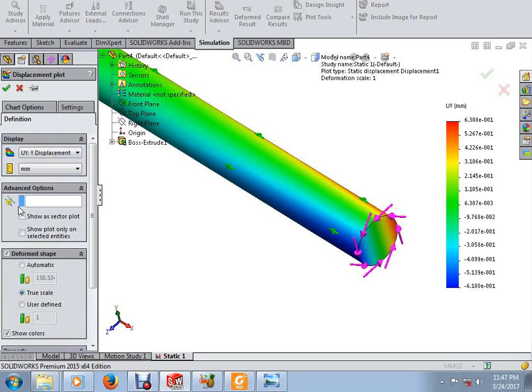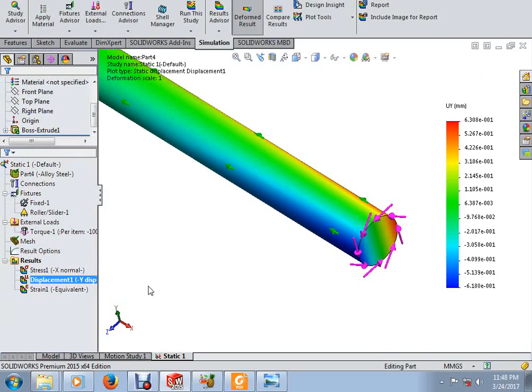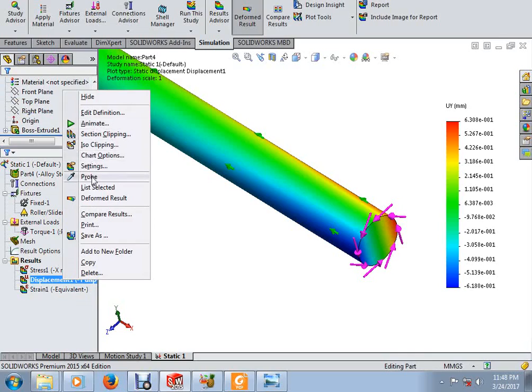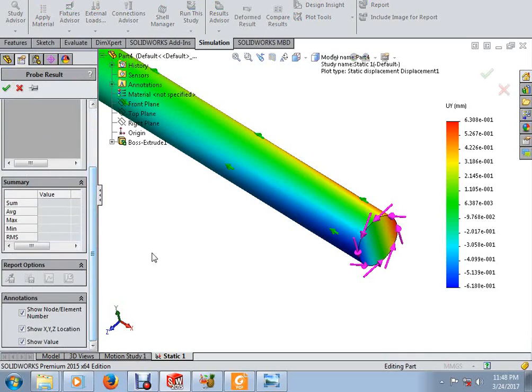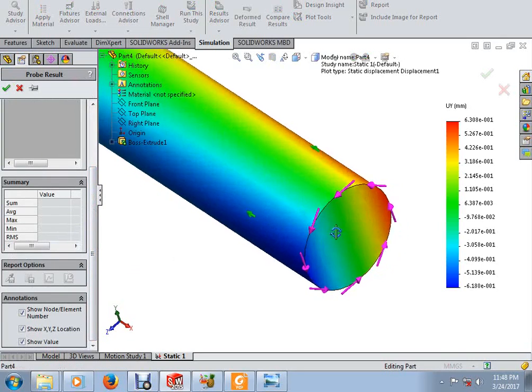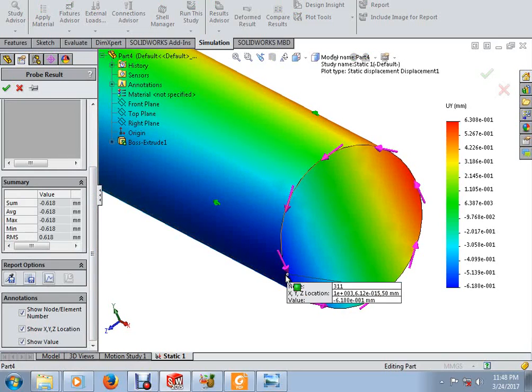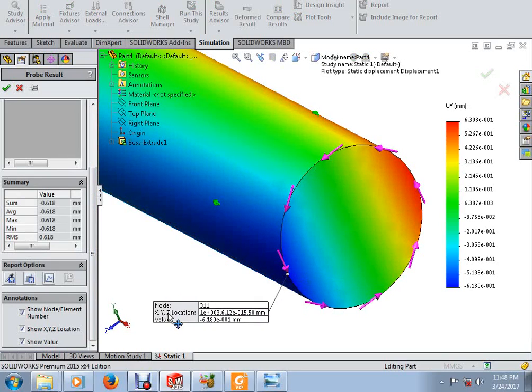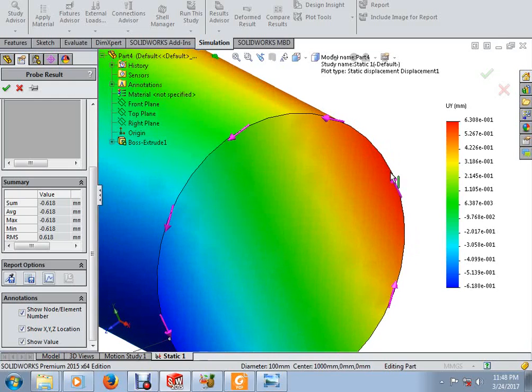We will plot the maximum and minimum displacement, just right click, use the probe. You can see here the maximum displacement is here, just dark blue, please note that is 0.0168 and maximum is here, 0.063.